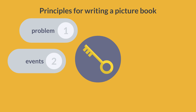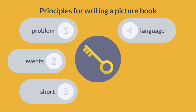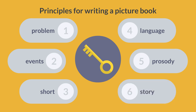2. Stories that are just a string of events are boring. 3. The good news about picture books is that they are very short, between 500 to 700 words. 4. Language is very important in all books, but especially in picture books for the very young. 5. Rhyme, rhythm, pattern, and repetition are also a feature in picture books. 6. The shape of the story is important, and so is the idea behind it.